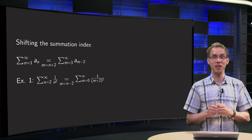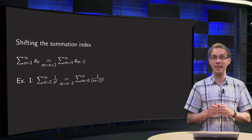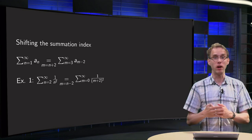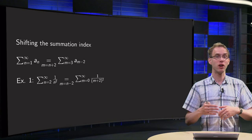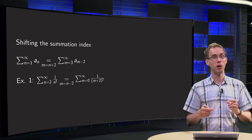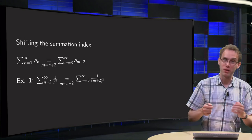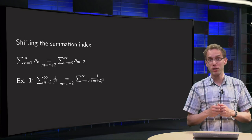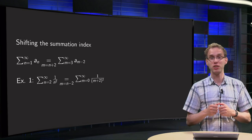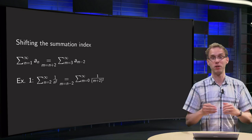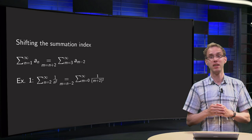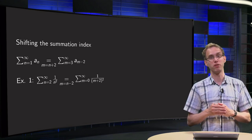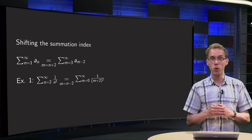Why do we always start summing at n equals 1? Can't we start summing from another point? Well, yes we can. The point is that we can convert our summation index such that we can start at any number we like, as long as we adjust the elements of our series accordingly.